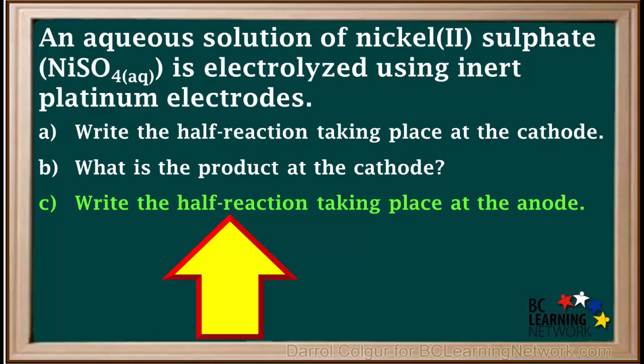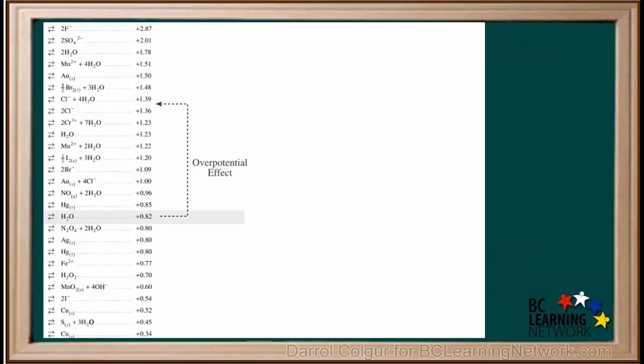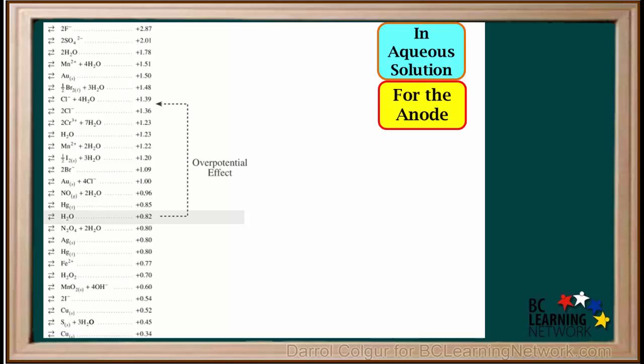Question C asks us to write the half reaction at the anode. At the anode, either sulfate ions or water will be oxidized. When we're considering the anode, we go to the right side of the reduction table. In aqueous solutions for the anode half reaction, we use this overpotential arrow on the right.